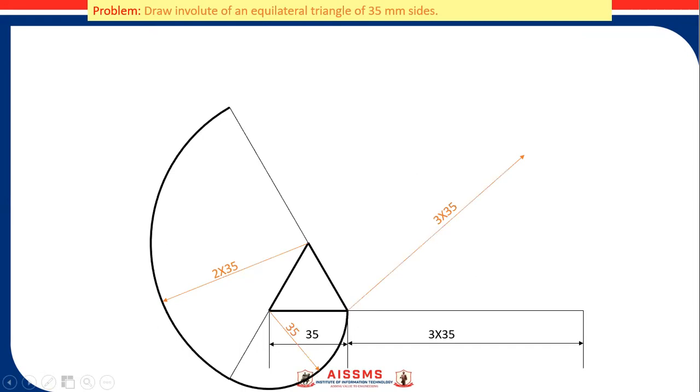Then third, in compass that is 3 times 35 means 105 mm is radius in compass. This is center point and draw an arc up to the last line here. This is my required involute.